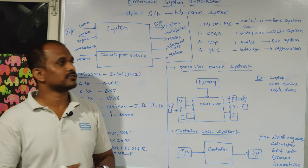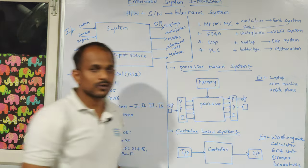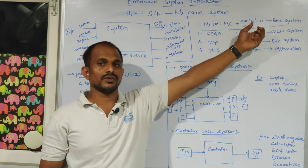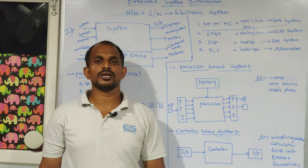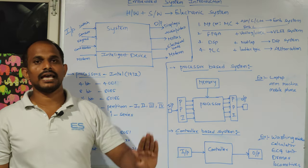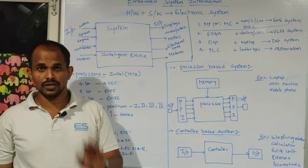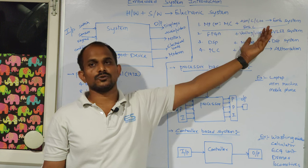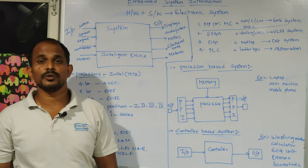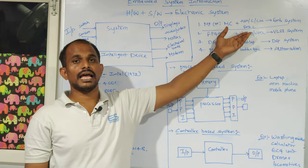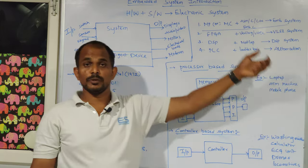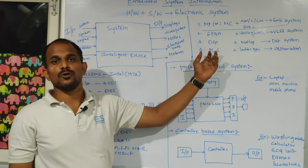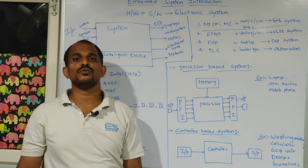Since we are in the embedded category, strengthen your skills on the device side and language side to become a perfect professional. To become an embedded engineer, proceed with C language standards and microprocessor/microcontroller knowledge. For VLSI, focus on Verilog/VHDL with FPGA boards. For DSP, focus on digital signal processors with MATLAB. For automation, follow PLCs and ladder logics.